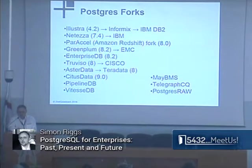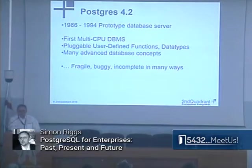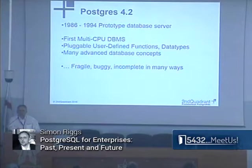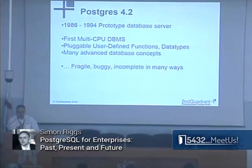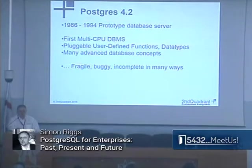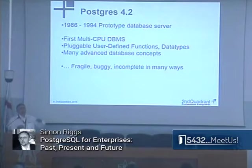Where did we start? In 1986, Michael Stonebraker went back into the university to design a second-generation database. His first generation was called Ingres, so he named the one that came after Ingres 'Postgres,' and that name has stuck. Many years later, Michael Stonebraker won the ACM Turing Prize for most influence on the industry and received $1 million — for creating Postgres.